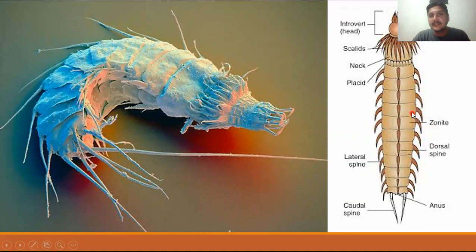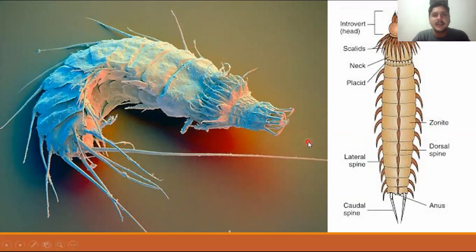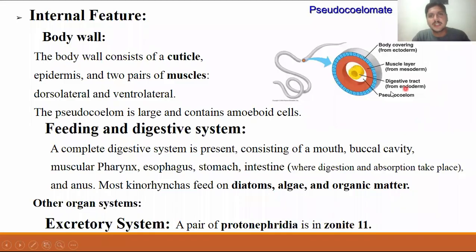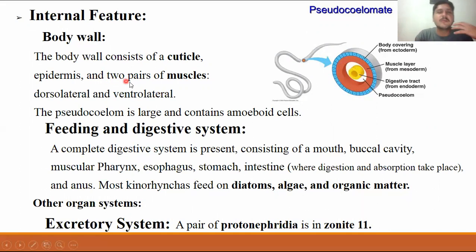This is the comparison between the dorsal spines and the lateral spines on the lateral side of the body. This is shown under electron microscopy, where you can see the spines on the zonites and the tail spines. Internally, the body wall is a cuticle over a syncytial epidermis, and the syncytial epidermis has two pairs of muscles: dorsolateral and ventrolateral muscles.